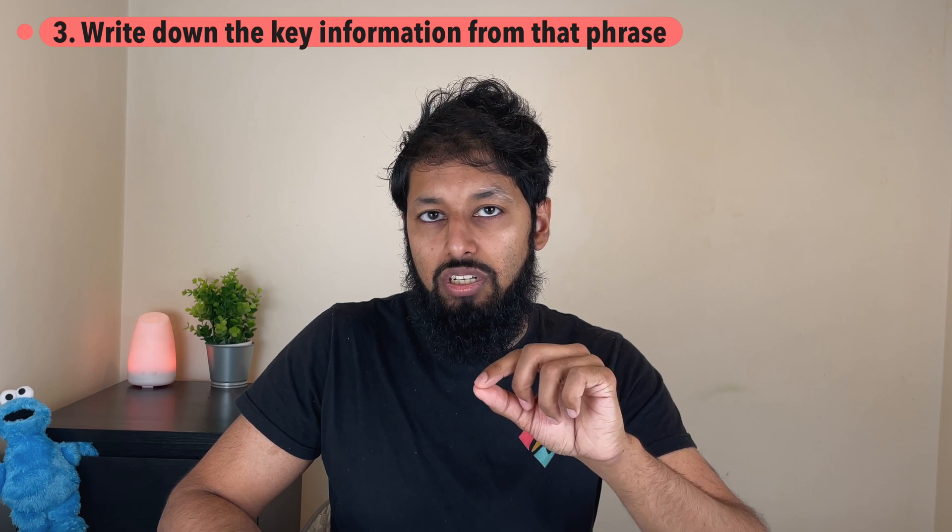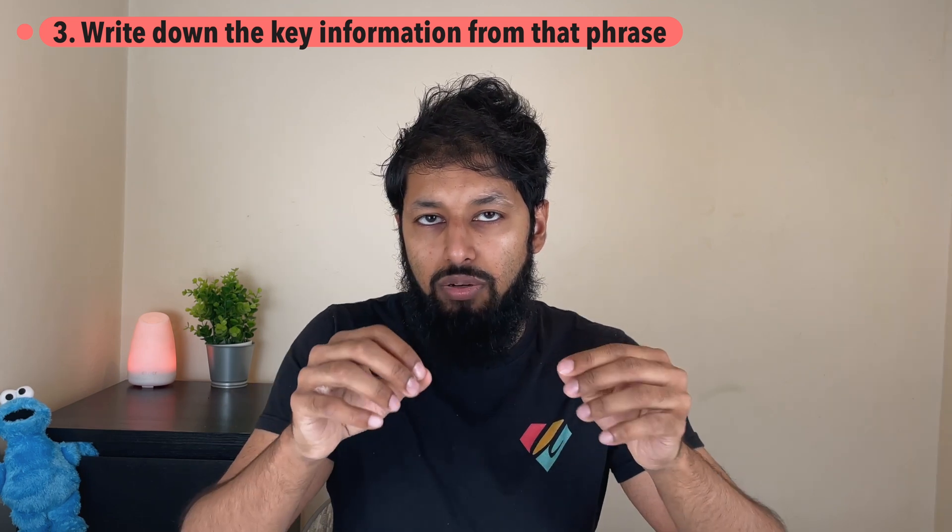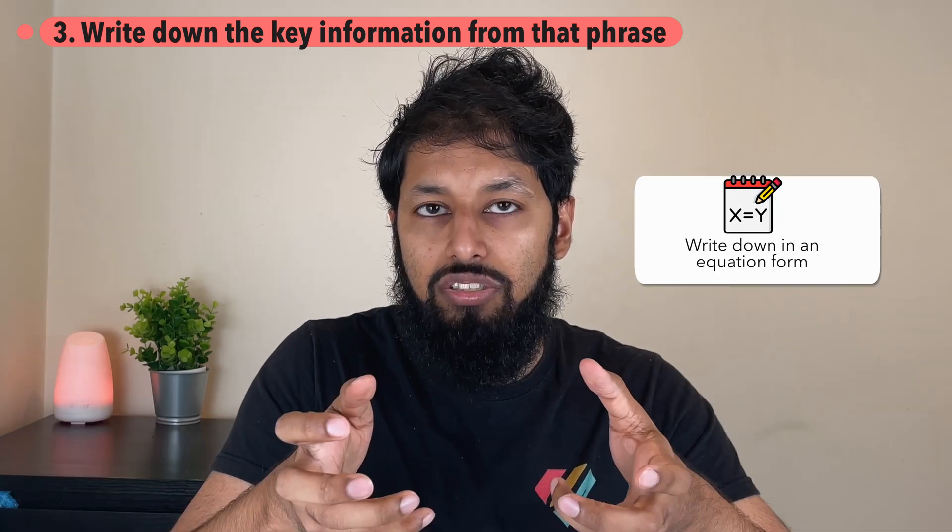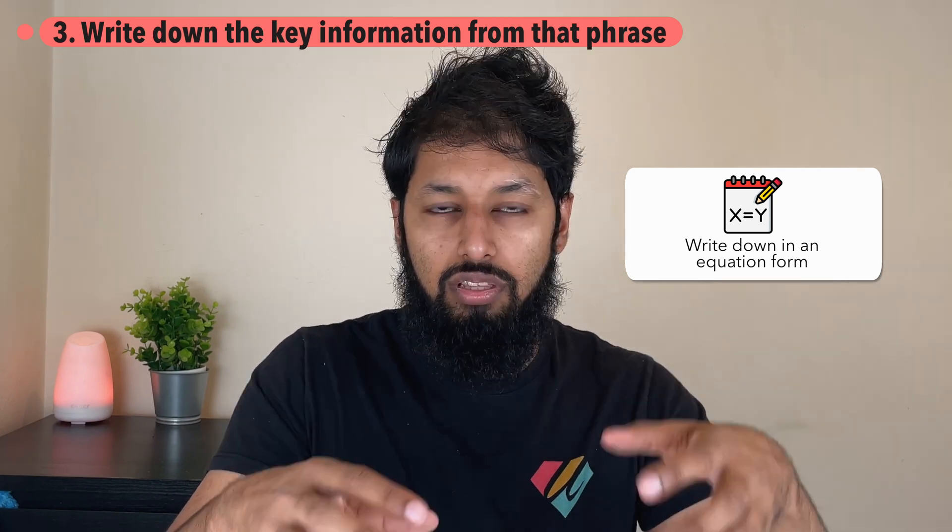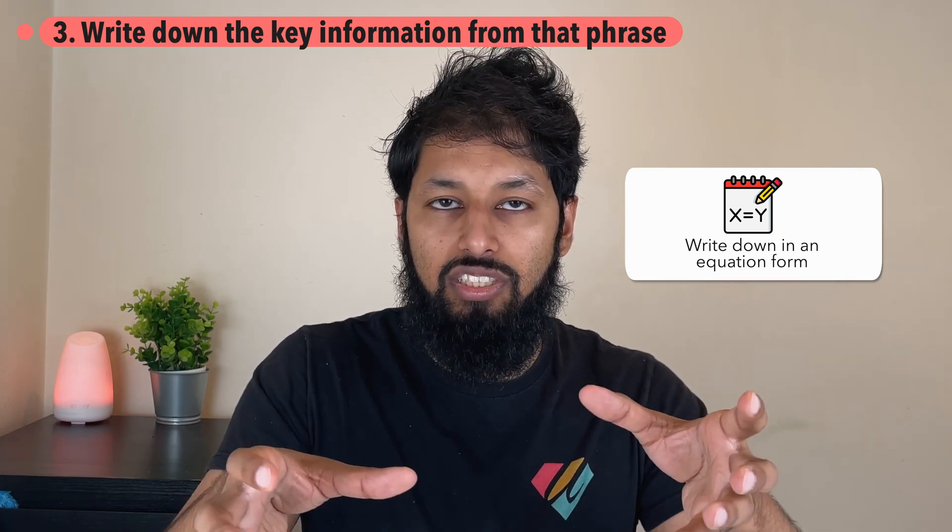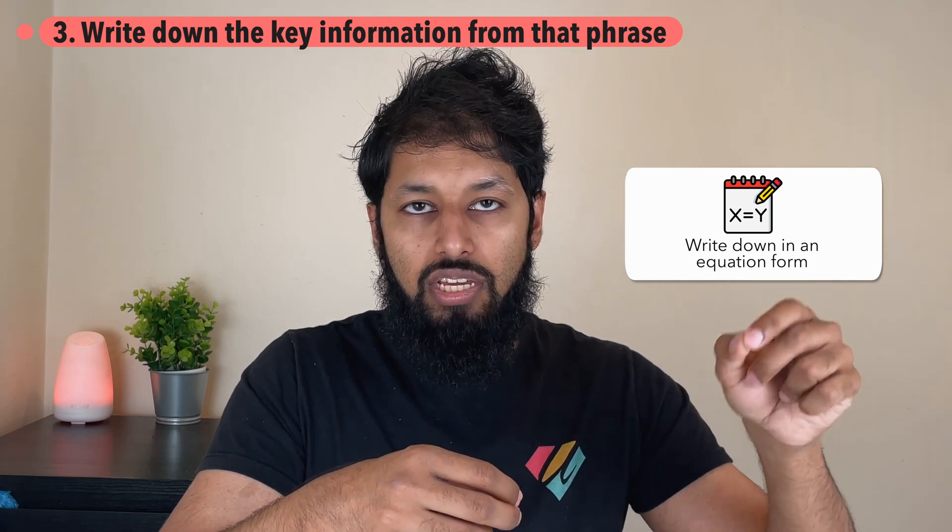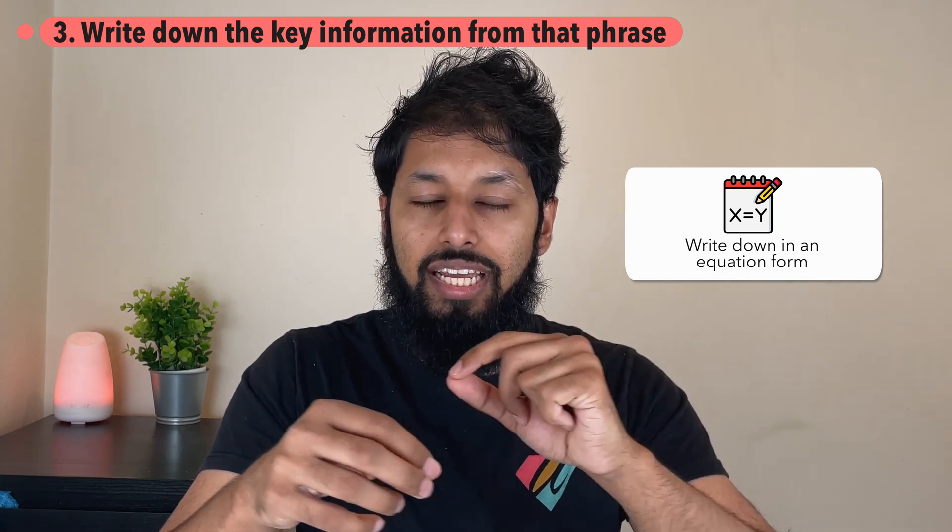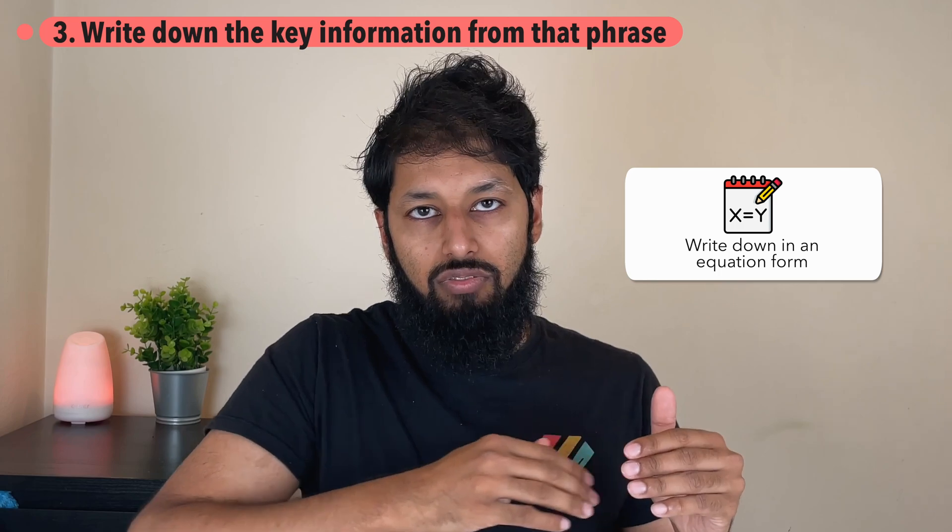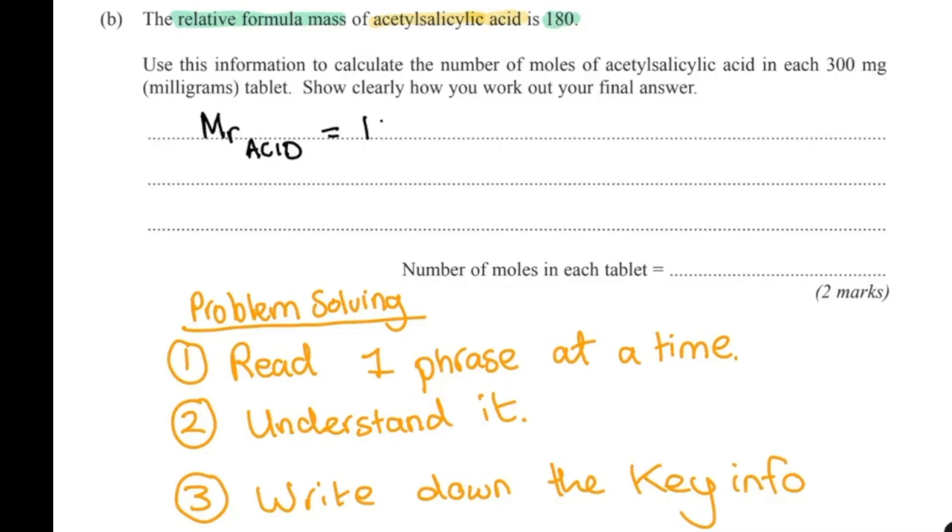Because we're only looking at literally one sentence, one phrase, I think we have. Number three: write down the key information from that phrase. The way you write down the key information is in an equation form. If they say for example this beaker has 10 milliliters of HCl in it, you're going to put down beaker volume equals 10 milliliters. You need to put that information down for yourself and I'm going to say Mr of acid is equal to 180.